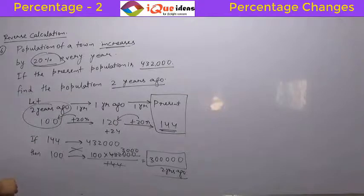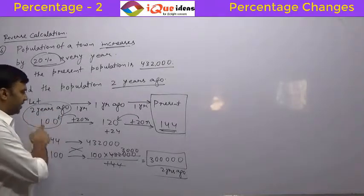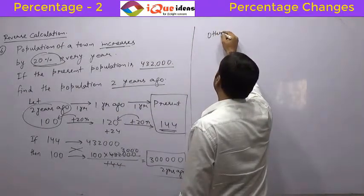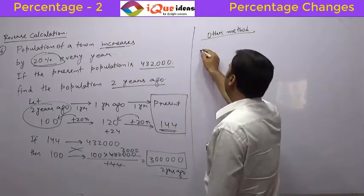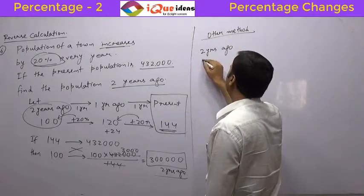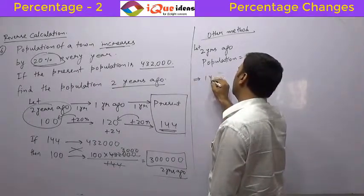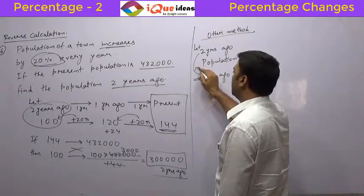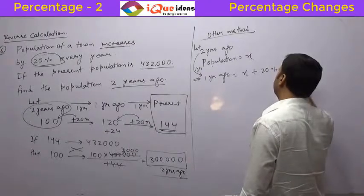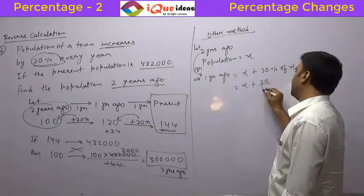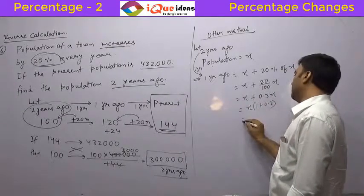This question shows you cannot do it directly. Now let us look at another method. Instead of assuming 100, let 2 years ago population be x. The population 1 year ago would be x plus 20% of x, which is x + (20/100)x. Since 20/100 is 0.2, this is x + 0.2x = x(1 + 0.2) = 1.2x. So the population 1 year ago is 1.2x.